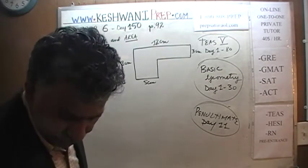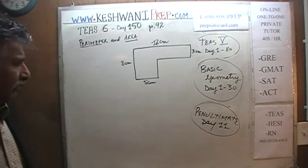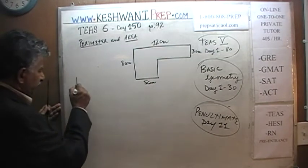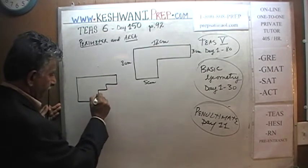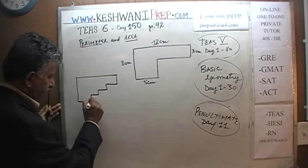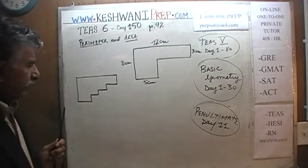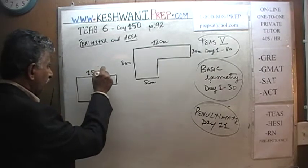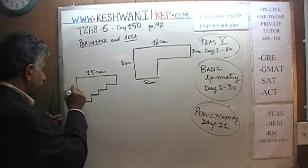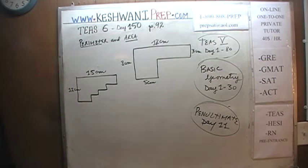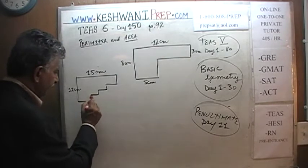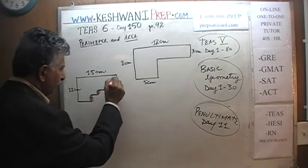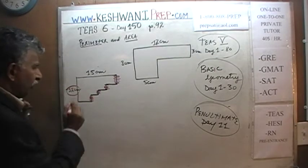Before we talk about the perimeter of such an irregular shape — or for that matter perimeter of something even stranger — if I tell you that this is 15 centimeters and this is 12 centimeters, can you tell me the perimeter of this picture? Well, it's very simple. This distance here, and this distance here, and this distance here all have to add up to 12 centimeters.